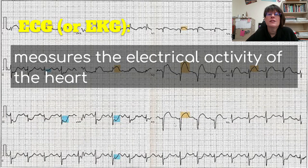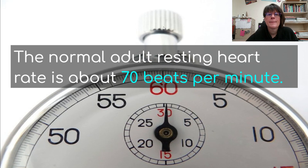An ECG or EKG, an echocardiogram, measures the electrical activity of the heart. There is a small bump for the contraction of the atria, then a larger peak for the ventricles, then a rest period. The normal adult resting heart rate is about 70 beats per minute. It is faster for children because they are smaller.